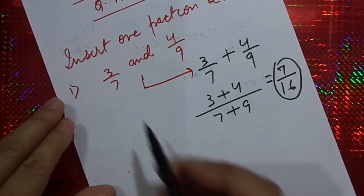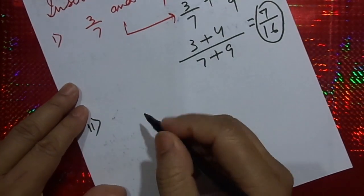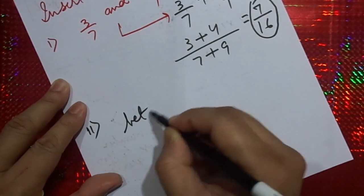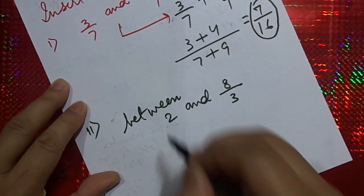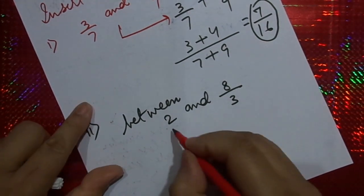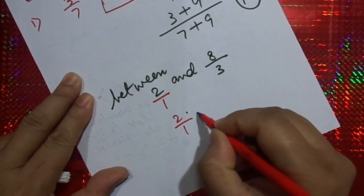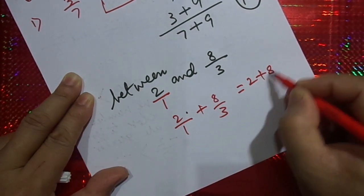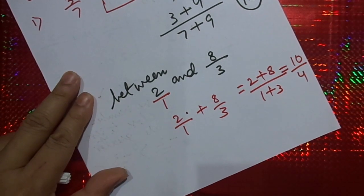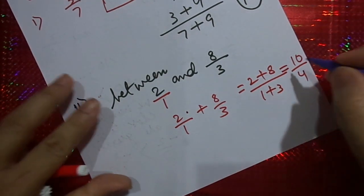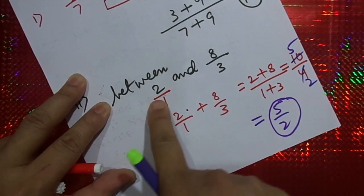Similarly, if they ask you to insert one fraction between 2 and 8 by 3, here 2 is also a fraction which can be written as 2 by 1. So our task becomes: 2 plus 8 by 1 plus 3, which equals 10 by 4. This can be simplified as 5 by 2, which is a fraction between these two numbers.